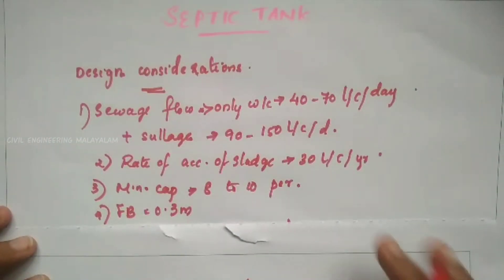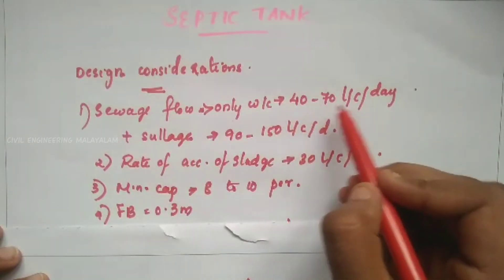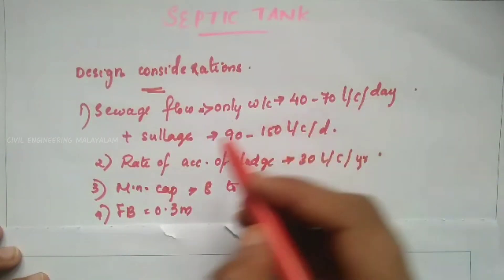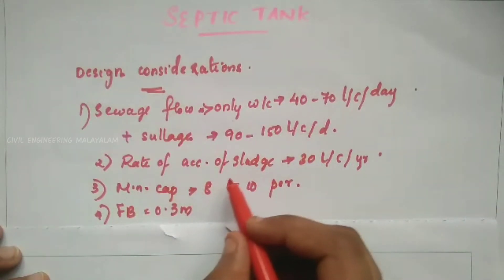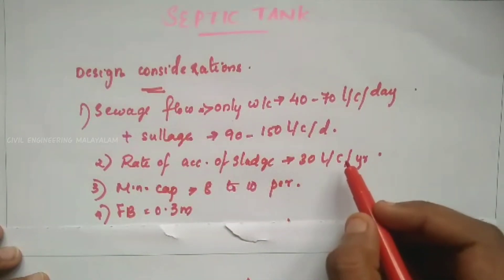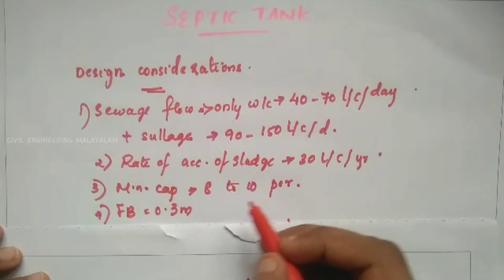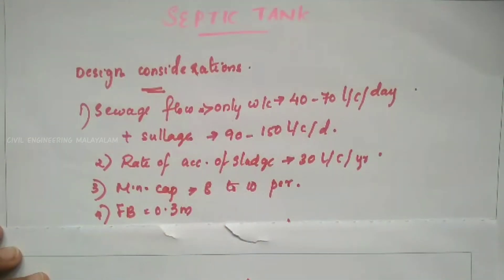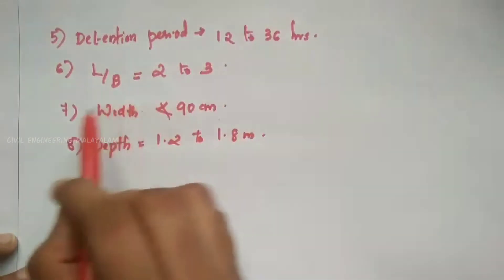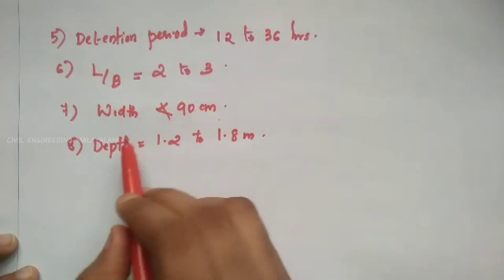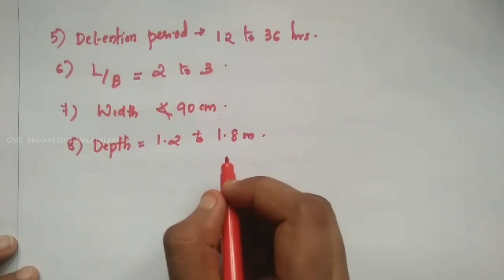To summarize the design considerations: sewage flow for water closets is 40 to 70 liters per capita per day, or 90 to 150 liters per capita per day overall. Rate of accumulation of sludge is 30 liters per capita per year. Minimum capacity is 8 to 10 percent. Freeboard is 0.3 meters. Detention period is 12 to 36 hours. L by B ratio is 2 to 3. Depth is 1.2 to 1.8 meters.